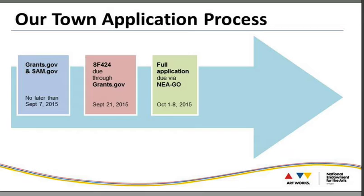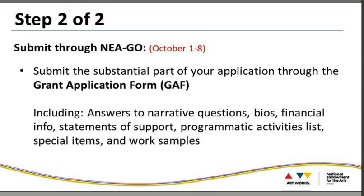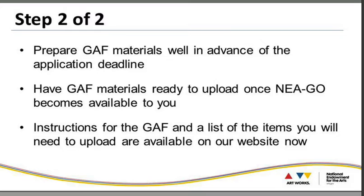After successfully submitting the SF-424, the next step is our full application due via NEA-GO, our grants online system where you submit the substantial part of your application. This system will only be open between October 1st and October 8th. It includes answers to narrative questions, bios of individuals or organizations on the project, financial information, statements of support, programmatic activities list, special items, and work samples. We advise you to review the grant application form materials well in advance and draft all responses in a Word document so you can easily move them into the system once NEA-GO becomes available.